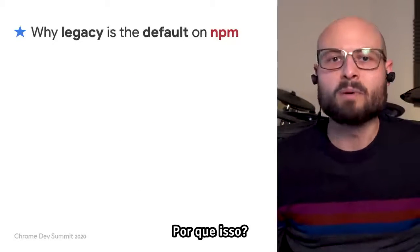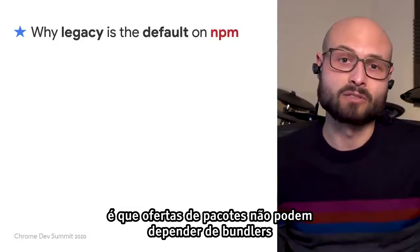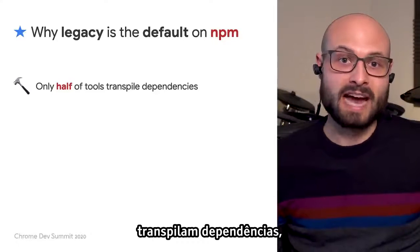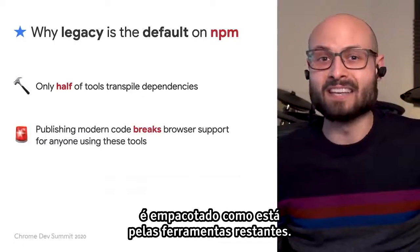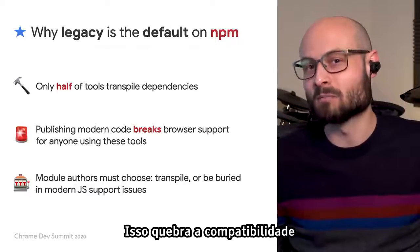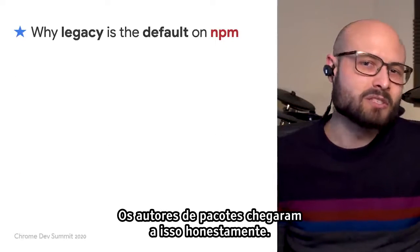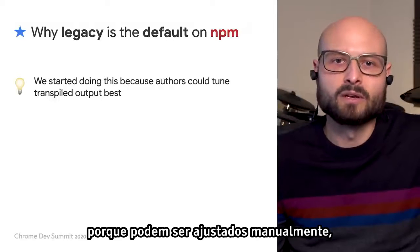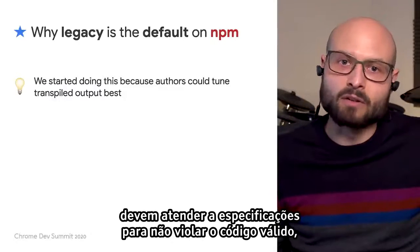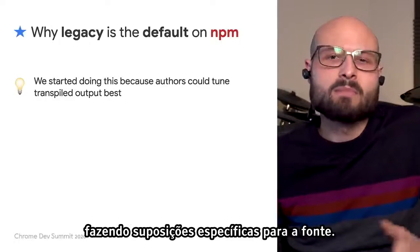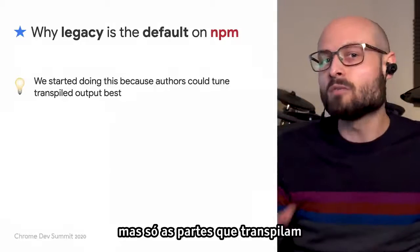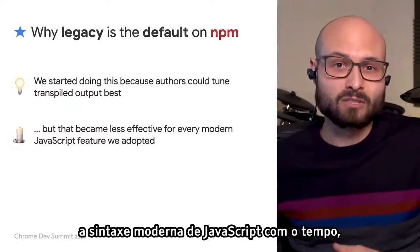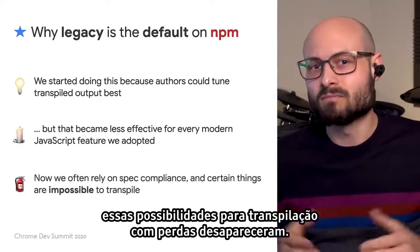A big part of the reason is that package authors can't rely on application bundlers to transpile dependencies to ensure browser support. We estimate that only half of build tools transpile dependencies at all, which means that modern code published to NPM gets bundled as-is by the remaining tools, and that unexpectedly breaks browser support for those users. Package authors came by this honestly — as modern JavaScript got popular, packages still published in ES5 because it could be hand-tuned. Where general-purpose transpilers have to be spec-compliant so they don't break valid code, package authors could transpile to more efficient output by making assumptions specific to their source. As we found ourselves using more and more modern JavaScript syntax over time, those possibilities for lossy transpilation faded away.